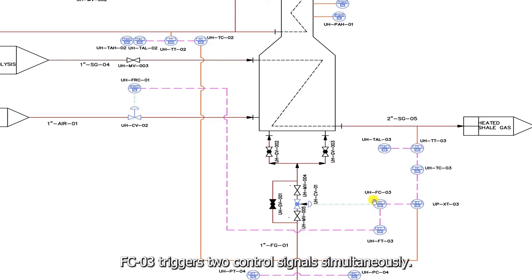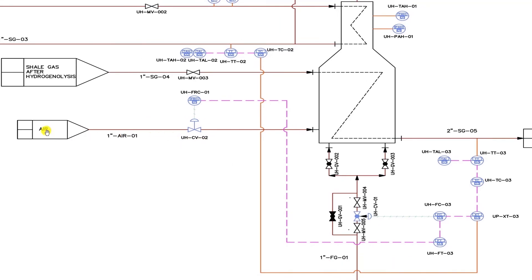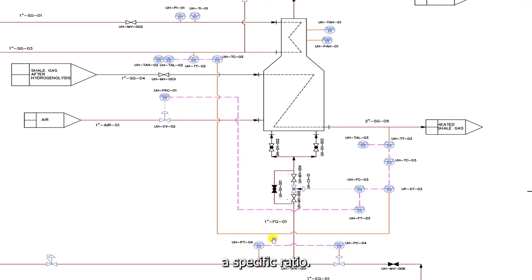The flow controller FC-03 triggers two control signals simultaneously. The first control signal is pneumatic. It acts on the fuel gas control valve CV-01 to adjust the flow of gas to the burners. The second control signal is electrical. It serves as input to the flow recording controller FRC-01, which converts it to a pneumatic signal to act on the air control valve CV-02 to adjust the flow of air admitted to the burners. This control setting forces the airflow to follow the gas flow according to a specific ratio.